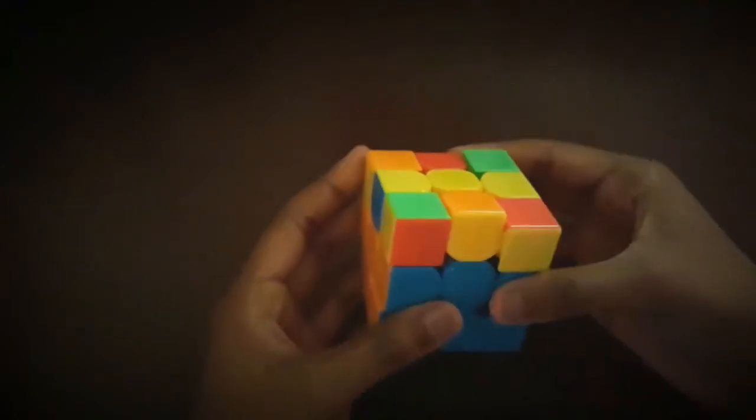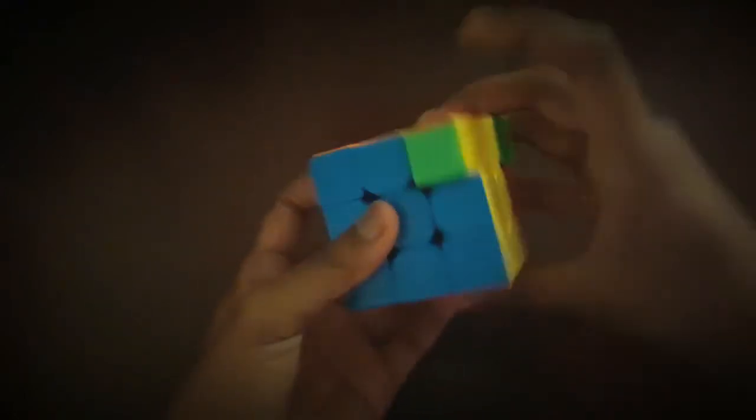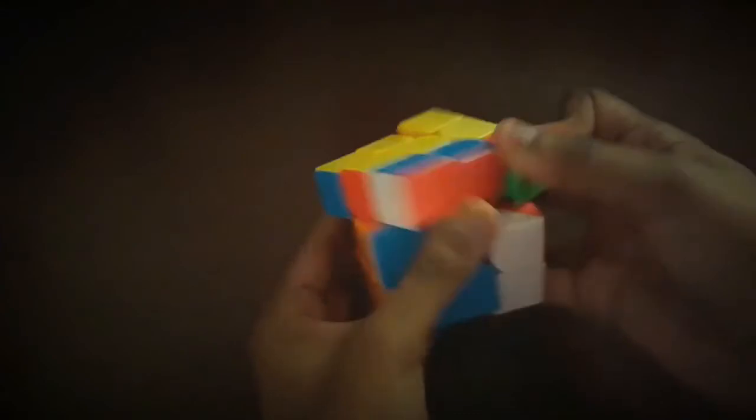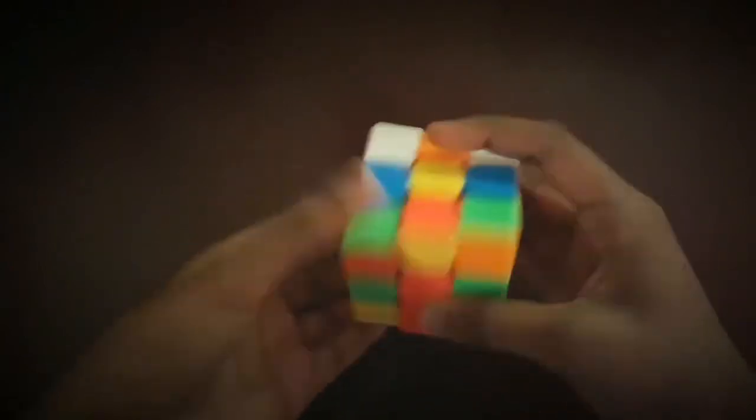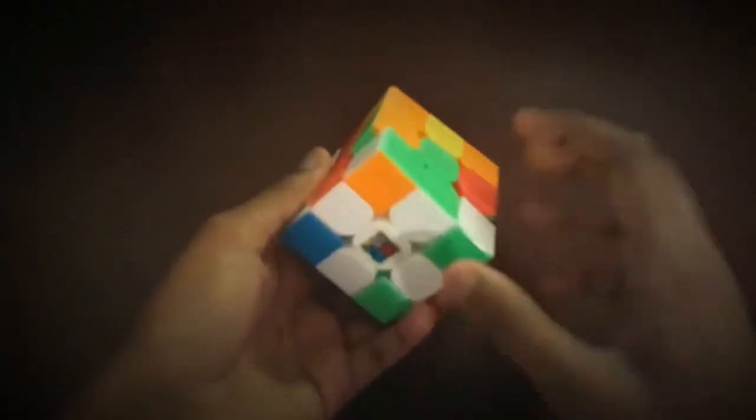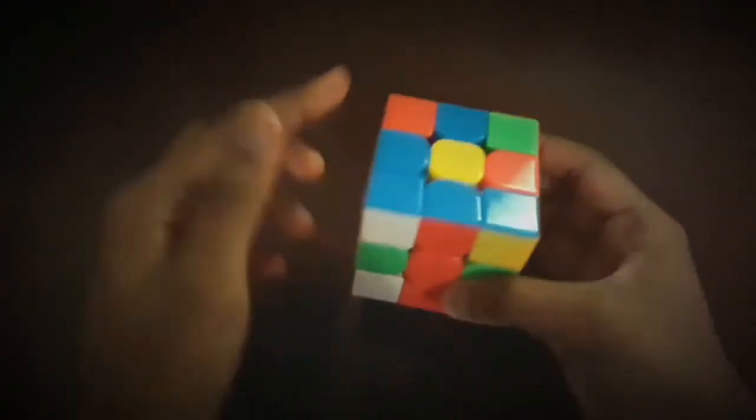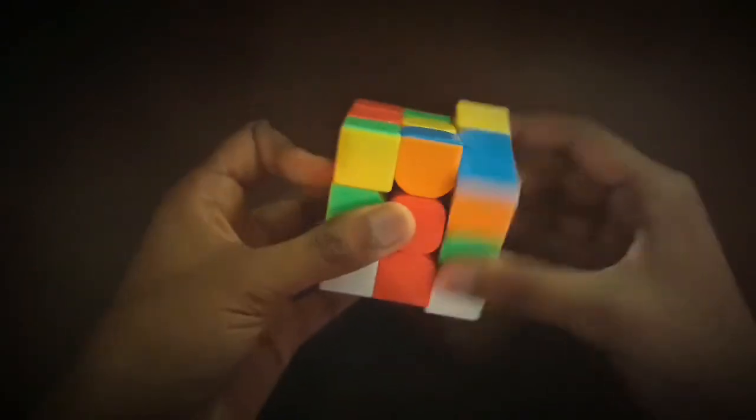Now moving on to the second walkthrough solve, I'm going to do the cross like I did before and then move on to F2L. So now the cross is complete. The first pair I see is the orange and blue one.